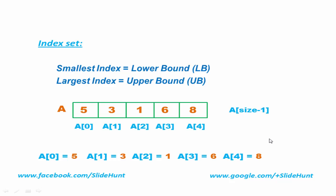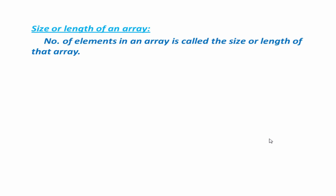The next thing we learn is the size or length of the array. The number of elements in an array is called the size or length of that array. We can find the length of an array using this formula: Length = upper bound − lower bound + 1.